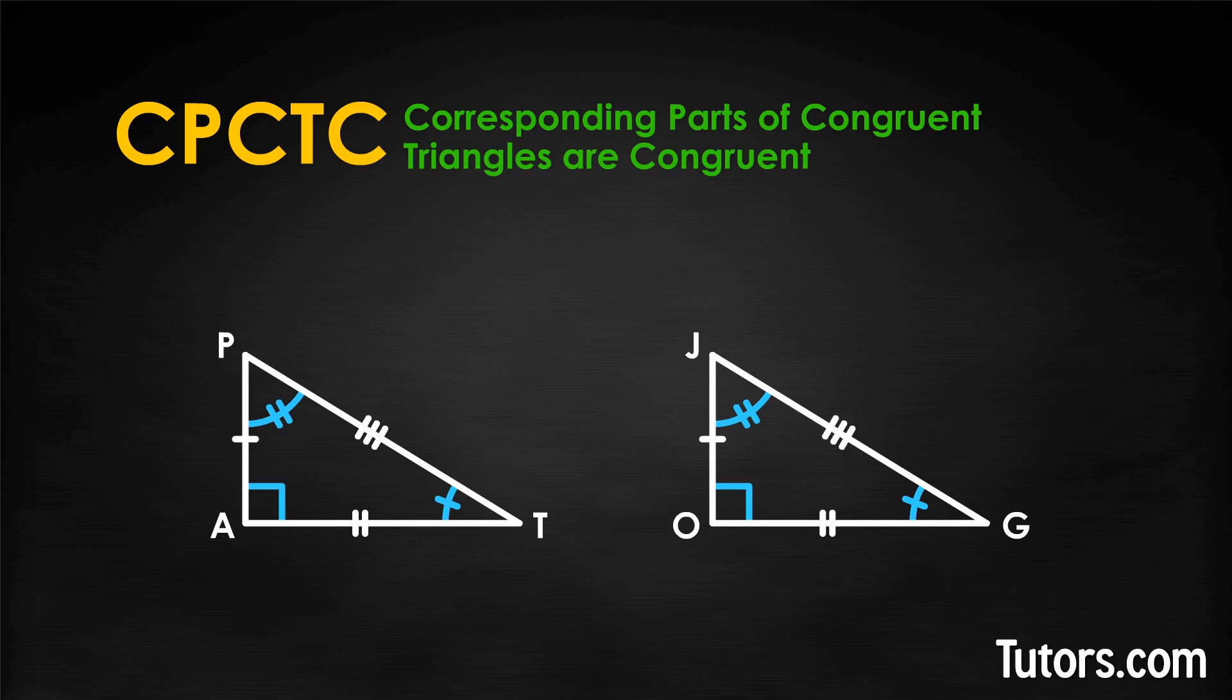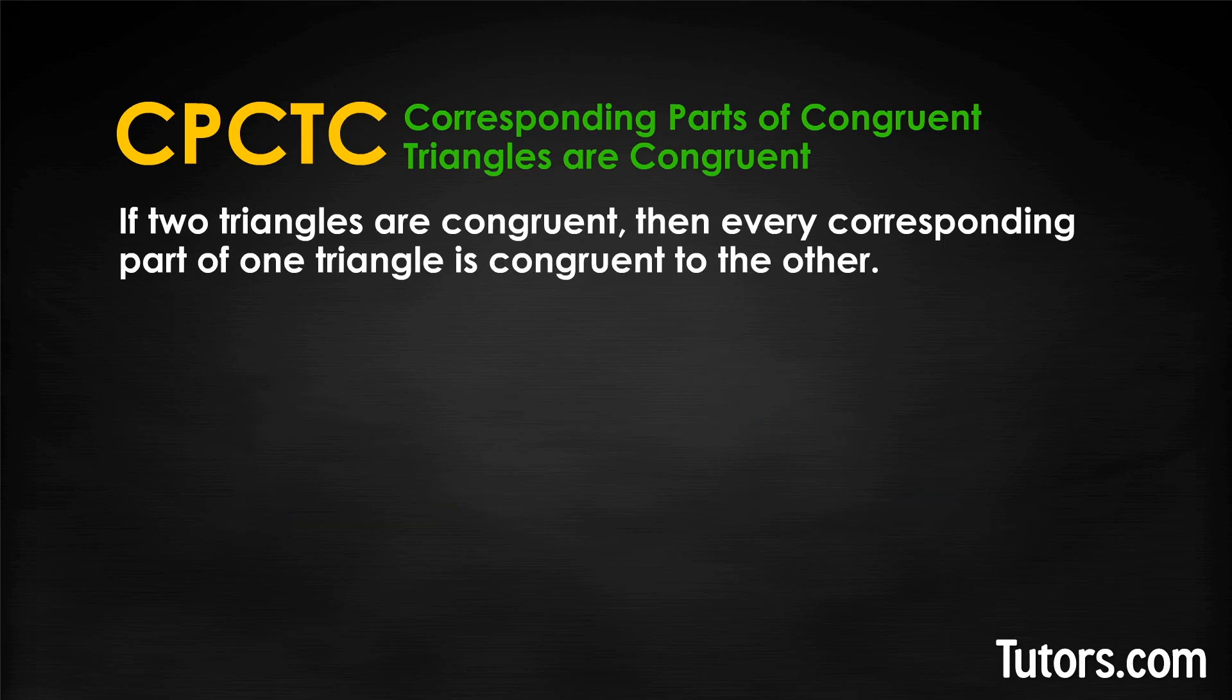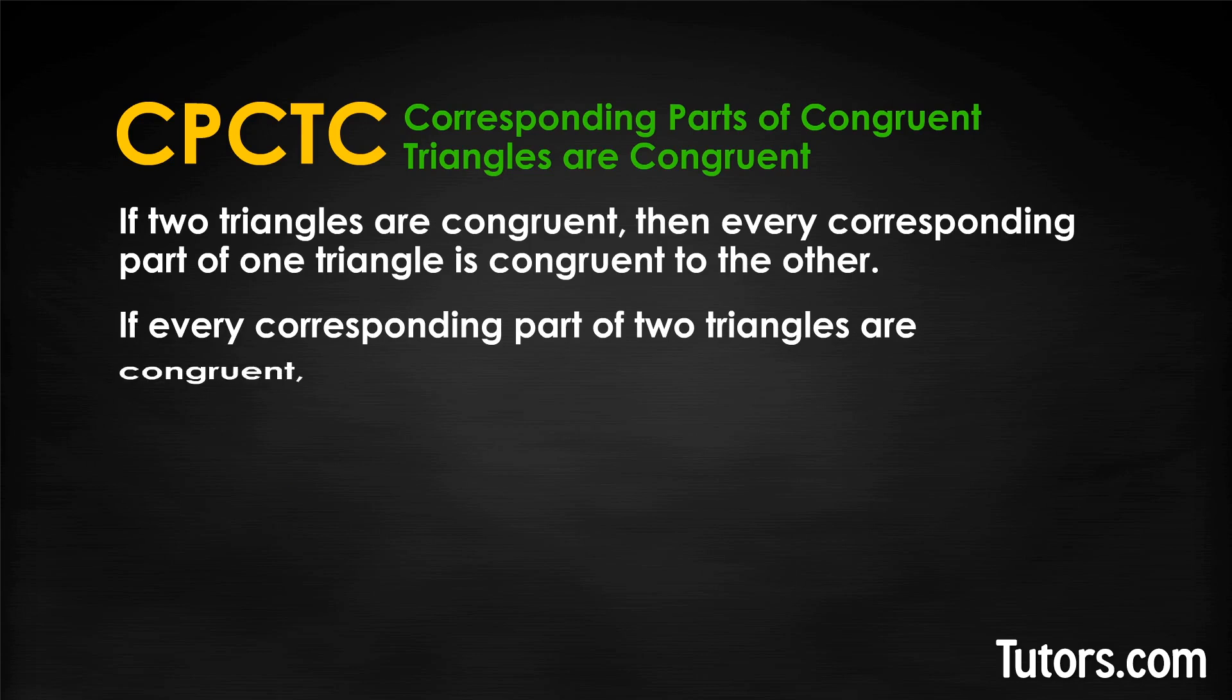CPCTC reminds us that if two triangles are congruent, then every corresponding part of one triangle is congruent to the other. The converse of this, of course, is that if every corresponding part of two triangles are congruent, then the triangles are congruent. The HL theorem helps you prove this statement.